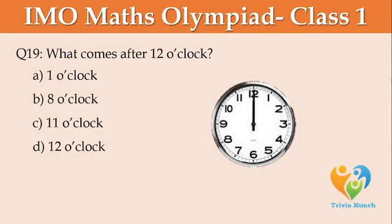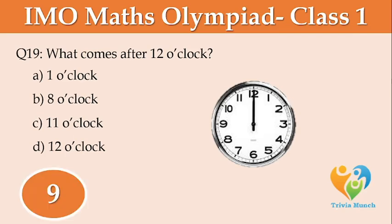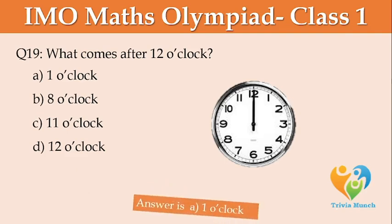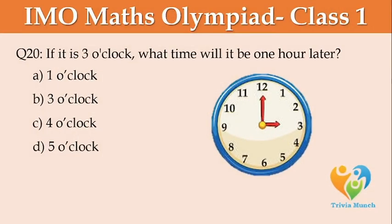What comes after 12 o'clock? Option A: 1 o'clock, Option B: 8 o'clock, Option C: 11 o'clock, Option D: 12 o'clock. If it is 3 o'clock, what time will it be 1 hour later? Option A: 1 o'clock, Option B: 3 o'clock, Option C: 4 o'clock, Option D: 5 o'clock.